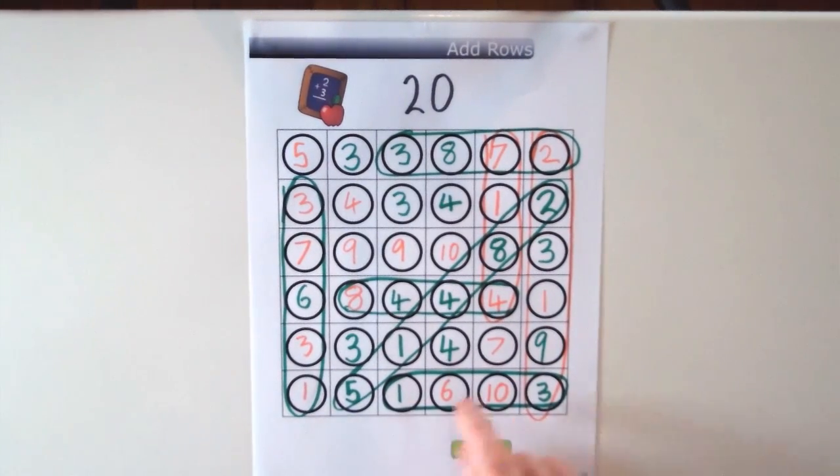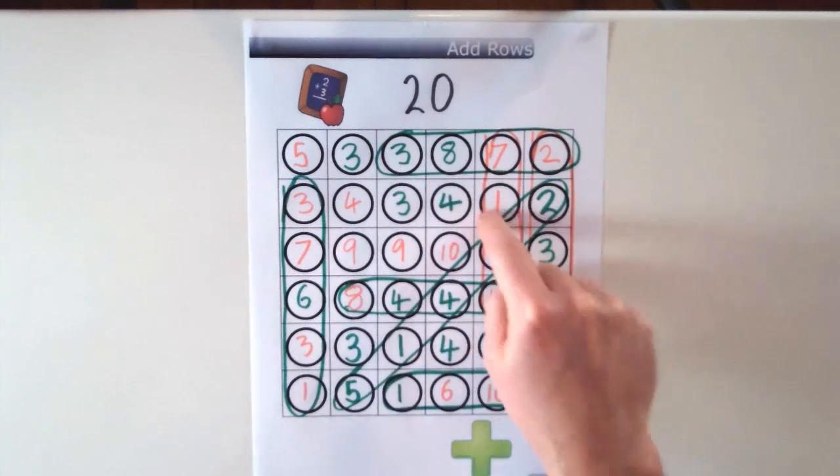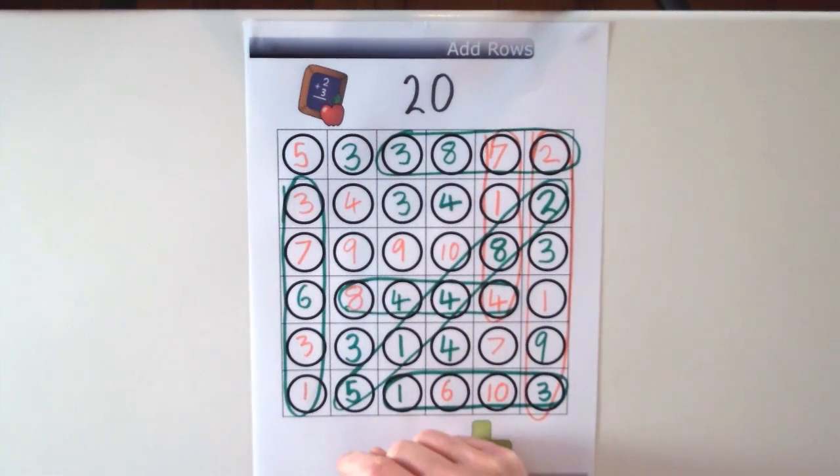Now if you have a look at this for a bit longer you'll probably find some more combinations or rows of numbers that equal 20 that I have missed.